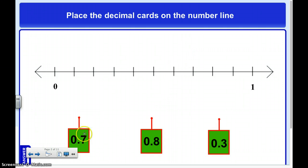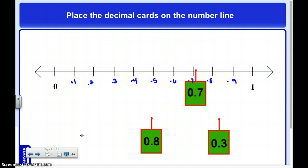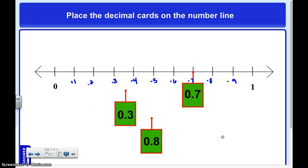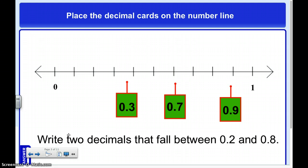Now I'm going to move these onto the line. I like to number my line, so I'm going to label this: one-tenth, two-tenths, three-tenths, four-tenths, five-tenths, six-tenths, seven-tenths, eight-tenths, nine-tenths, and this would be one whole, or ten-tenths. Now I know exactly where to put my numbers. Three-tenths goes here, and eight-tenths goes here. That's how easy it is to order decimals on a number line when you know what it's counting by.